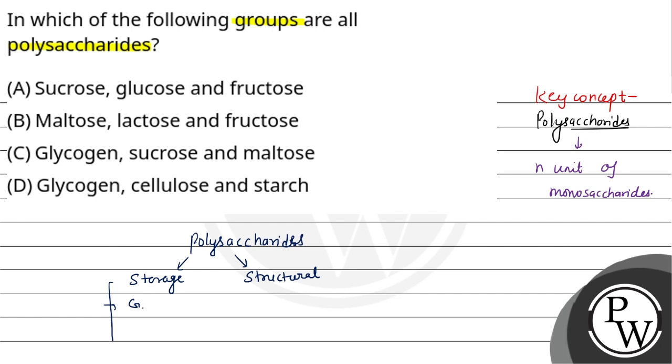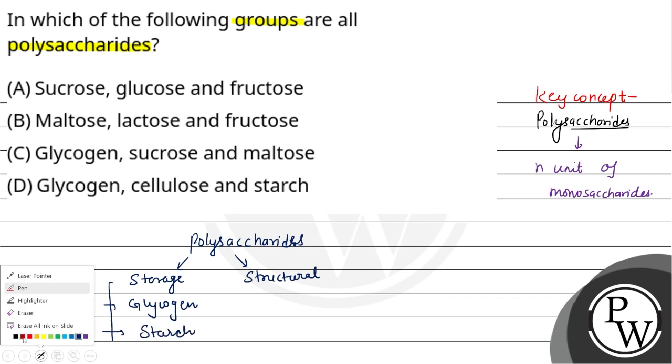In storage form, in humans or animals glucose storage is in glycosin form, and in plants starch is for storage. But cellulose, that is the structural form of polysaccharides. Plant cell wall is made of cellulose.